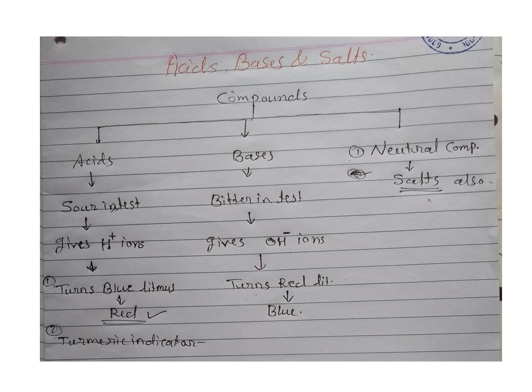Now we come to neutral compounds. What is meant by a neutral compound? Compounds which show neither acidic property nor basic property are called neutral compounds. Examples include sugar and water — these are neutral in nature, meaning they neither give H⁺ ions nor OH⁻ ions. Water is neutral in nature, sodium chloride (common salt) is also neutral, and sugar is also neutral. These compounds are neither acidic nor basic.